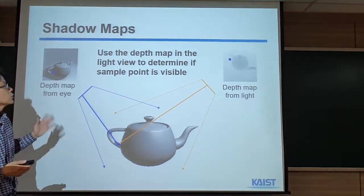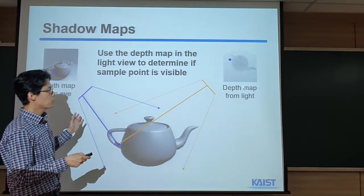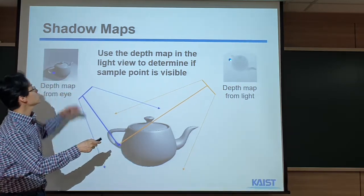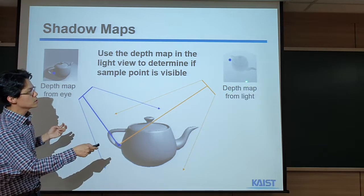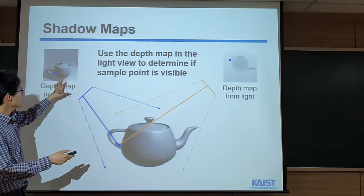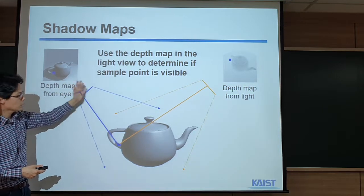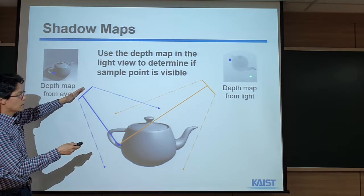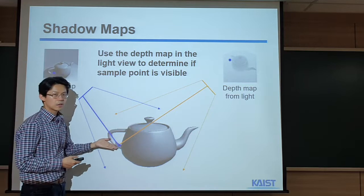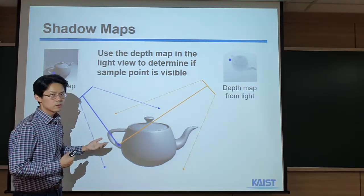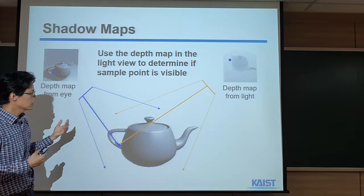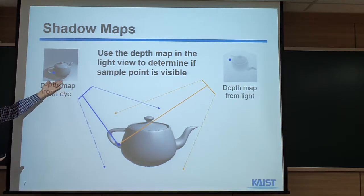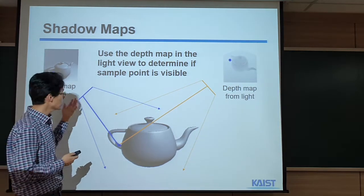So, basically, it's a two-pass algorithm. First, we rasterize this triangle in the perspective of the light source and get the depth map. This is nothing but a shadow map — it's a depth map, but it's a 2D image. So we can treat it as a texture map. In the second pass, we rasterize this triangle from our viewpoint, and we consider this shadow map. Depending on that, we can see whether we can get the energy or not. Depending on that, we add specular and diffuse terms — if we get the energy it looks brighter, otherwise it looks darker.